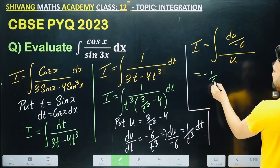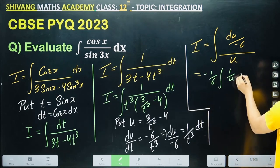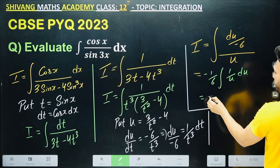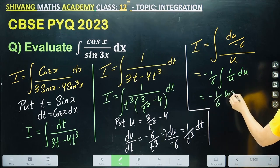Take out this 6. This minus 1/6 will remain behind. 1 over u du. Its integration will become log u. Just put the value of u here.